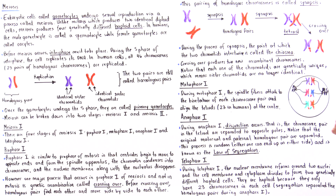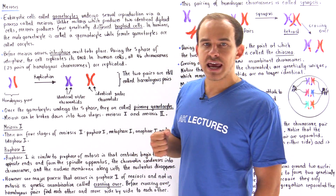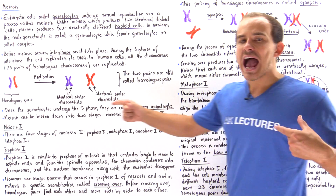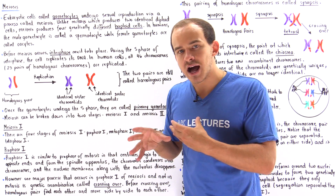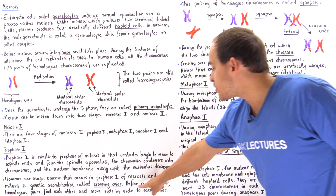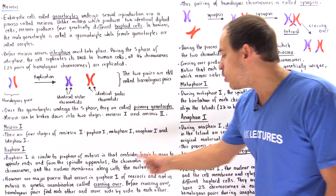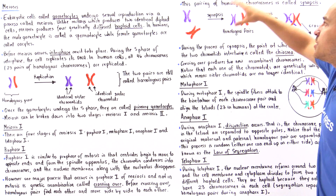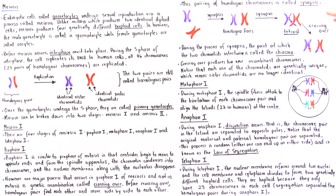Before crossing over actually takes place, our two homologous pairs of chromosomes have to find one another and orient themselves side by side — and that allows crossing over to take place. Before crossing over, homologous pairs must find each other and move side by side. This pairing and movement of homologous chromosomes next to one another is known as synapsis.